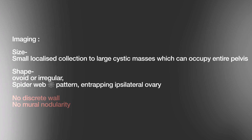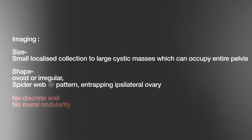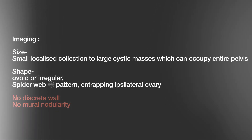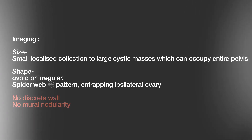On imaging you will see a cystic lesion with the following characteristics. The size can vary from a small localized collection to a large cystic mass occupying the entire pelvis. The shape can be ovoid or irregular, but the characteristic pattern is the spider web pattern — where the cyst is seen to entrap the ipsilateral ovary.